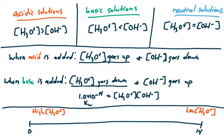The first is here in this first row. For acidic solutions, the hydronium ion concentration is greater than the hydroxide ion concentration. If the solution is considered basic, the hydronium ion concentration is less than the hydroxide ion concentration. And for neutral solutions, the hydronium ion concentration is equal to the hydroxide concentration.